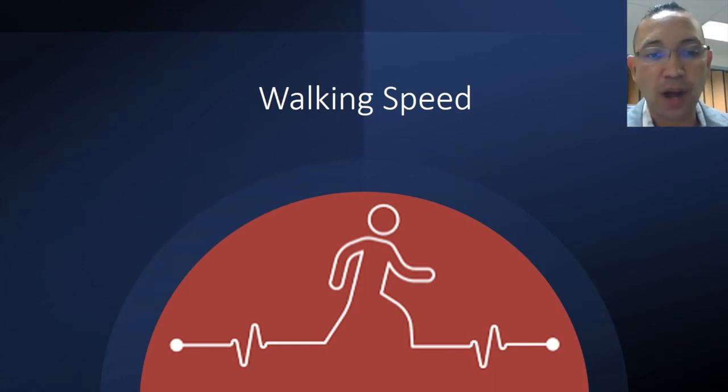How fast you walk can be used as an indicator of overall health. Our emphasis will be on the 10-meter walk test, which is a performance measure used to assess walking speed in meters per second over a short distance. Several variables contribute to individual differences, including age, sex, and height.